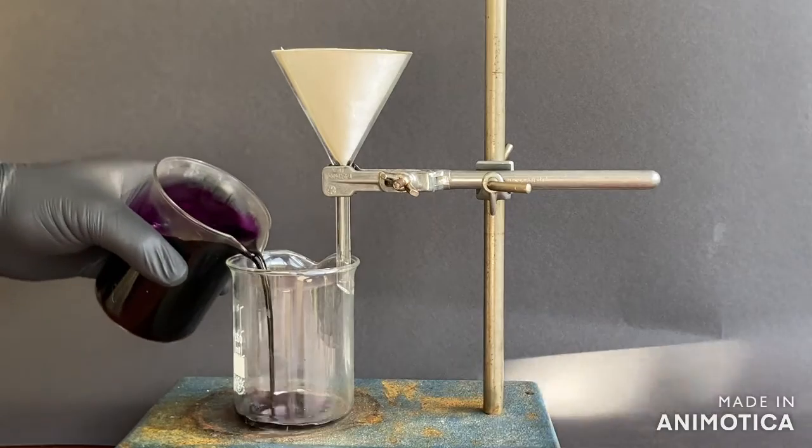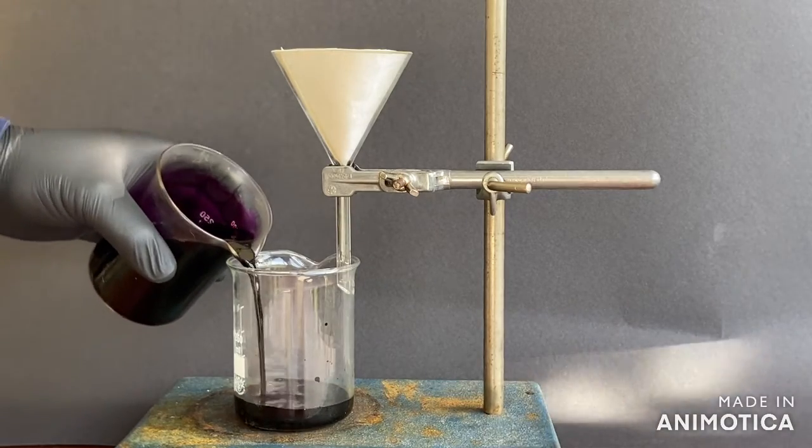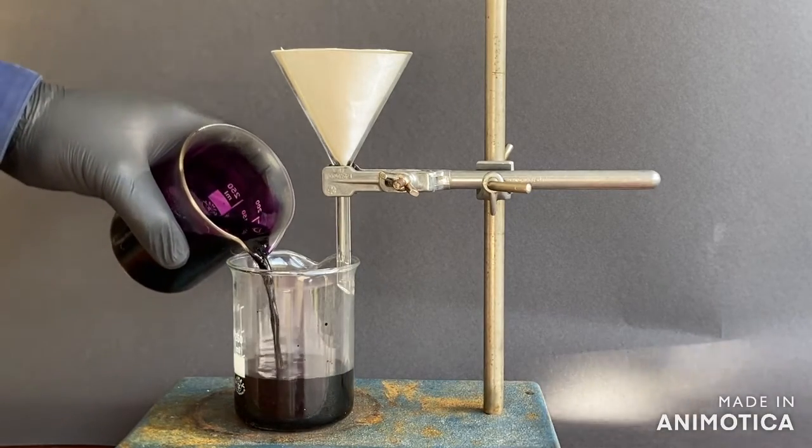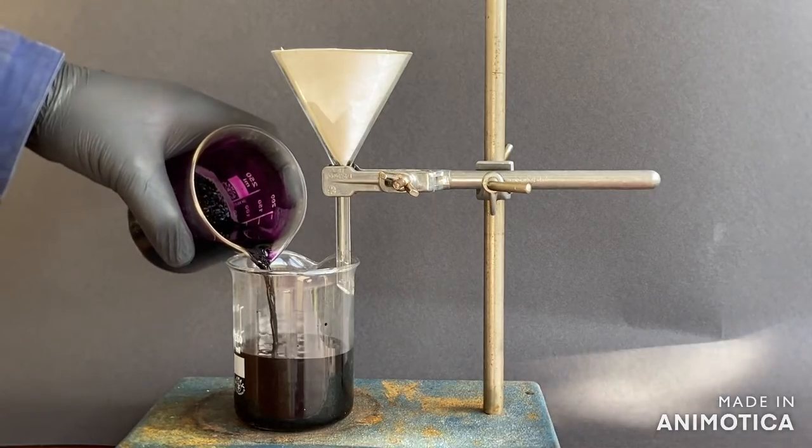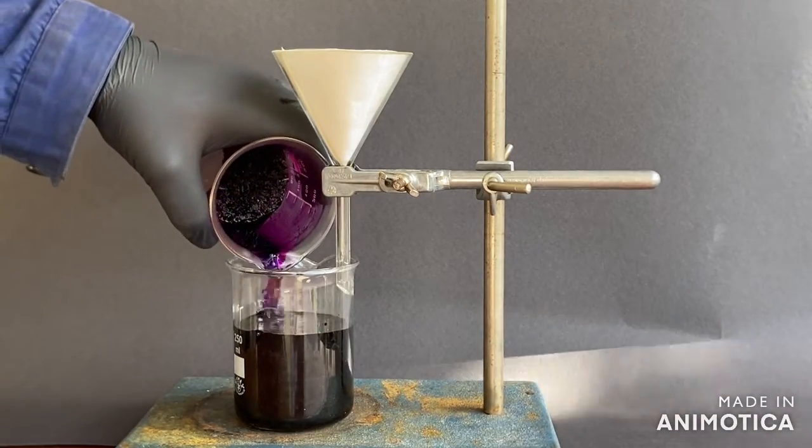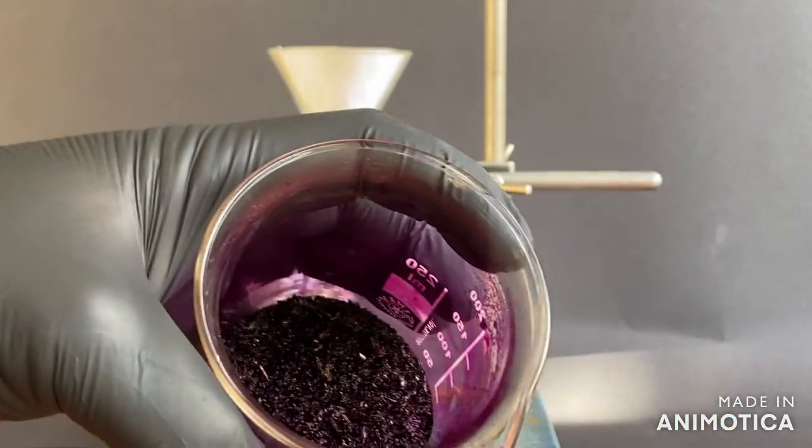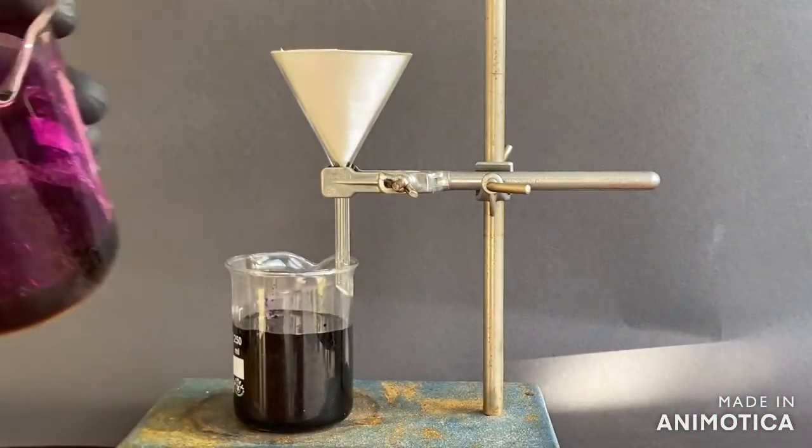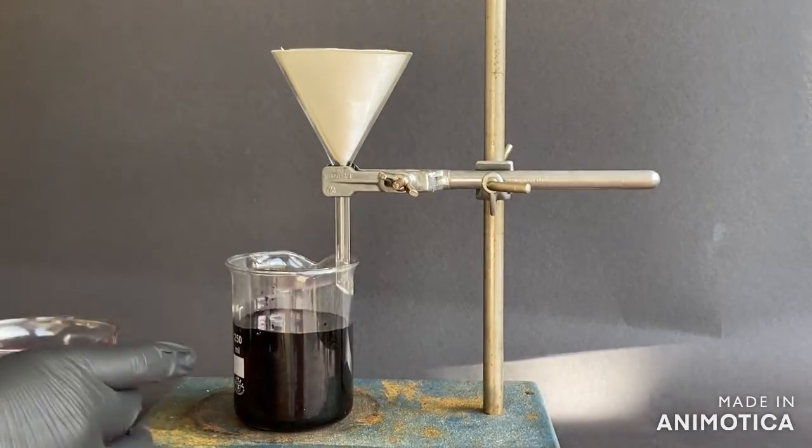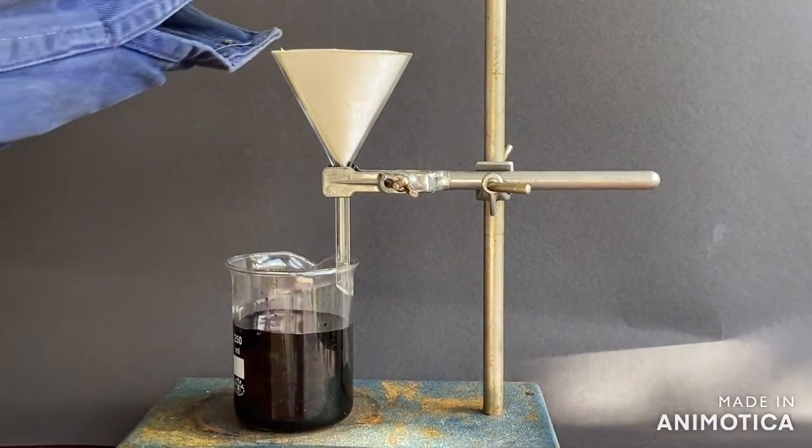First I will decant most of the liquid. As you can see there is a bunch of ammonium permanganate crystals on the bottom of the beaker. Now we filter the crystals.